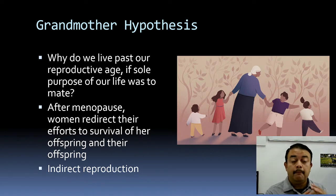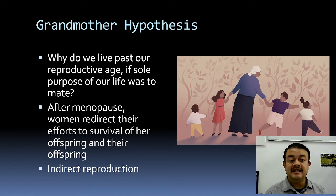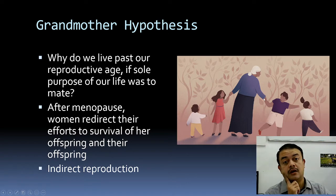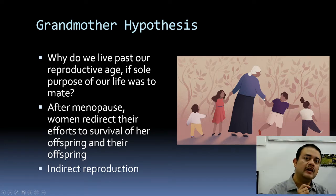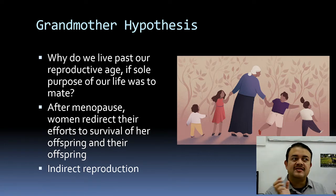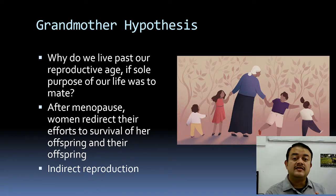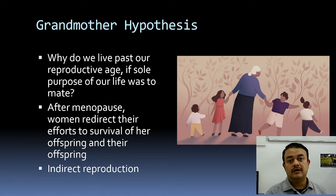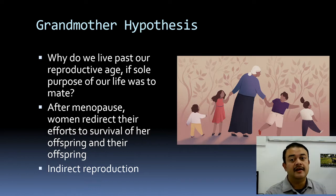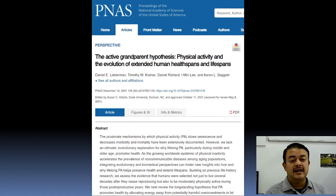A grandmother shares half her genes with her offspring and one quarter with her grandchildren. By supporting their survival she contributes to the persistence of her shared genes in the population — even without reproducing directly. This is called indirect reproduction. There is even a recent paper in PNAS titled 'The Active Grandparent Hypothesis: Physical Activity and Evolution of Extended Human Healthspans and Lifespan.'